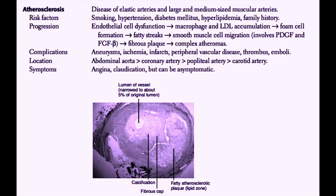It's thought that atherosclerosis begins with endothelial cell dysfunction. When endothelial cells are damaged, it exposes the collagen underneath them, and macrophages and LDL accumulate under the endothelial cell. Foam cells are macrophages that have taken up large amounts of lipid. Foam cells accumulate and form fatty streaks, which are collections of foam cells. Under these fatty streaks, smooth muscle from the media migrates into the area of the plaque. This migration is thought to involve PDGF, or platelet-derived growth factor, and fibroblast growth factor beta, which leads to the formation of a fibrous plaque and a complex atheroma.